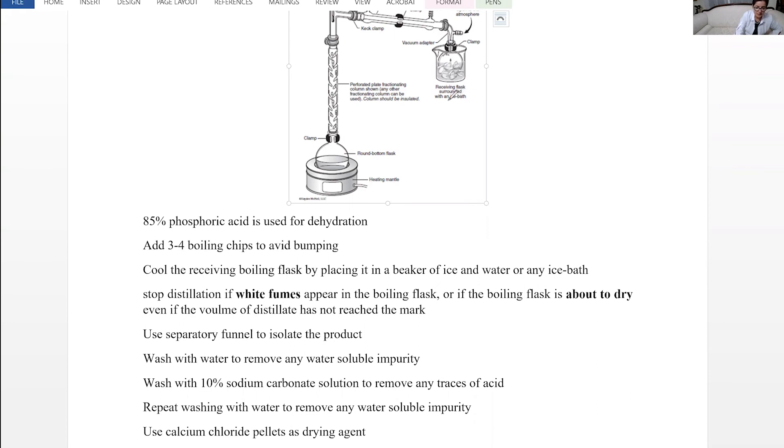We want to stop the distillation when we see white fumes inside the boiling flask. If it starts fuming or making white cloud, you stop. You definitely stop distillation if you see it's almost dry. When you stop distillation you must lower the heating mantle. Just unplugging the power regulator doesn't cool off fast enough for distillation to stop.